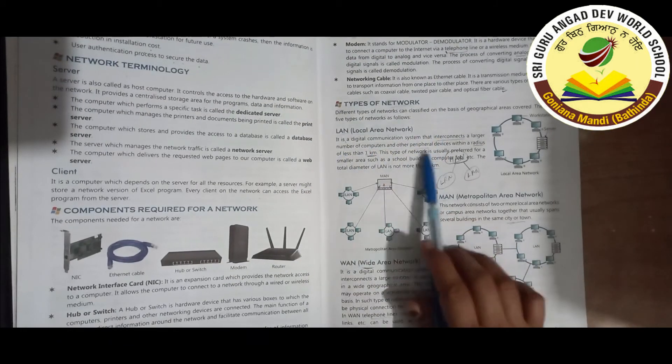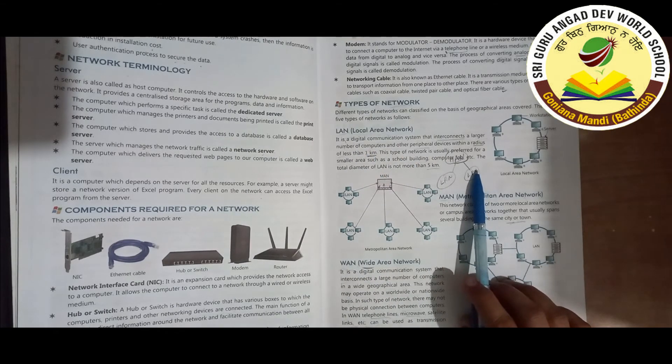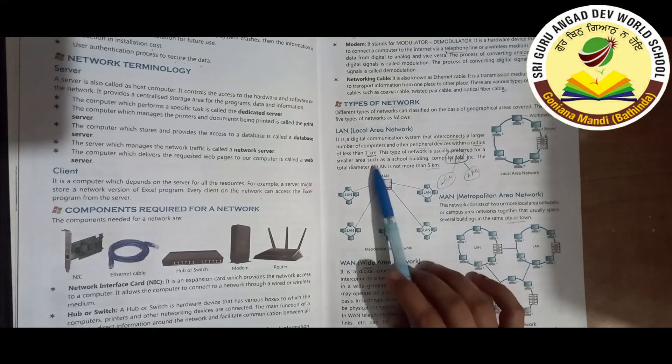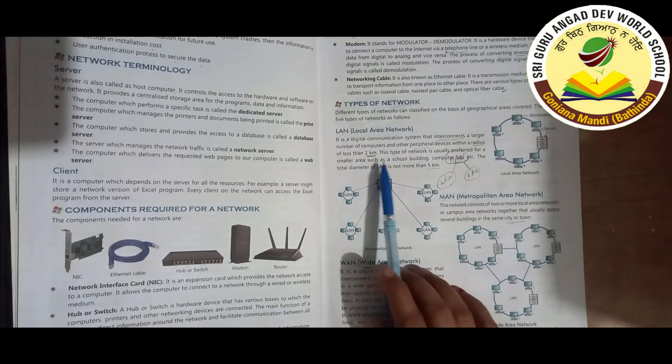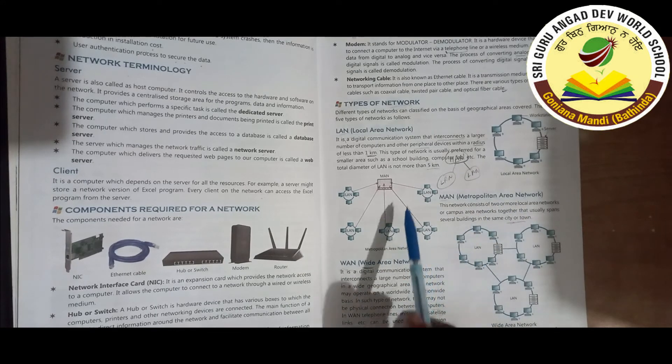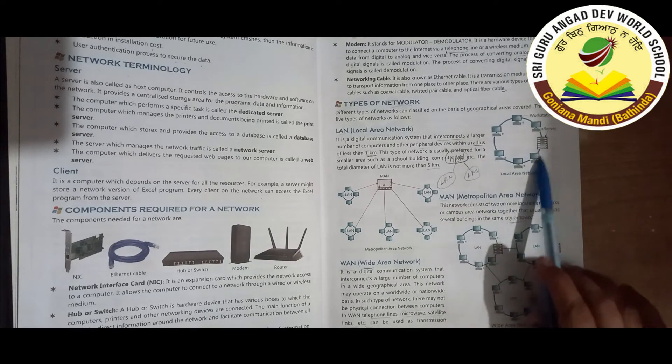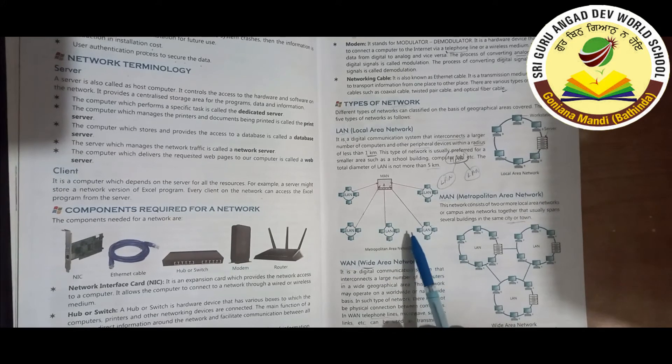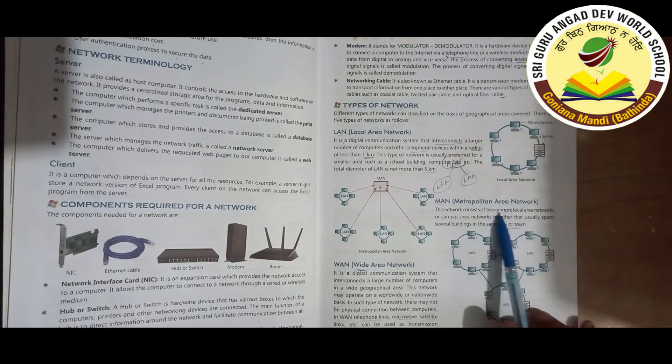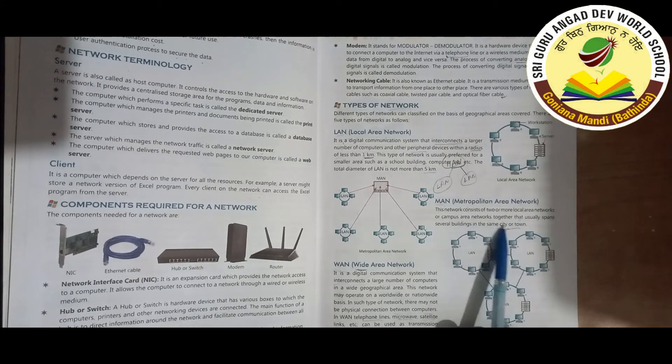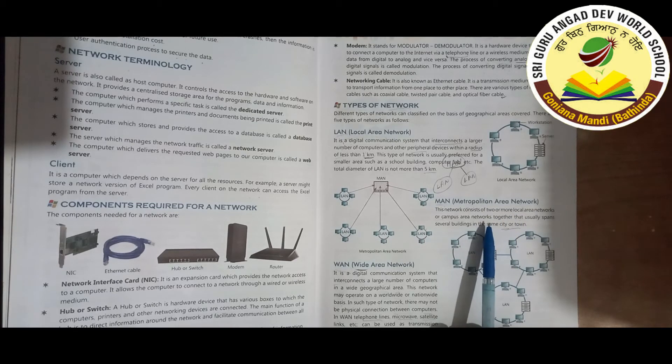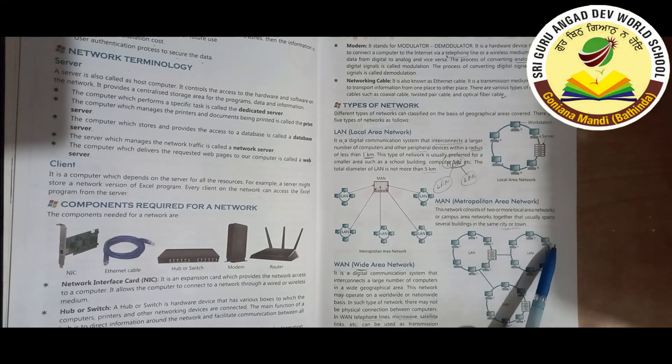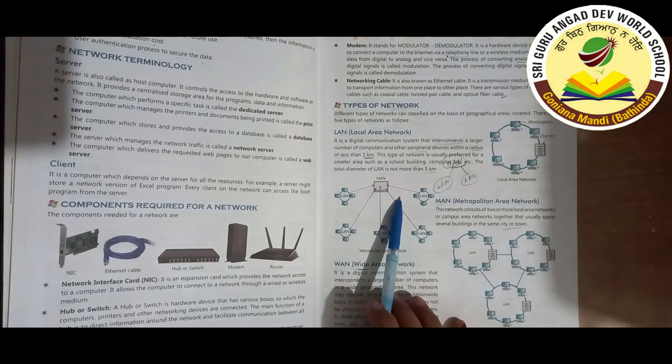Types of networks: LAN, Local Area Network. LAN is a digital communication system that interconnects a large number of computers and other peripheral devices within a radius of less than one kilometer. CAN, Campus Area Network, connects two areas in the same city or town buildings.